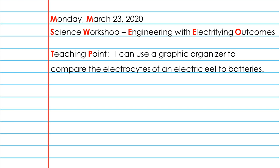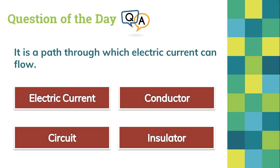Before that, we have our question of the day. It is a path through which electric current can flow. We have: electric current, conductor, circuit, or insulator. I recommend that you just pause your video and try to choose the right one.